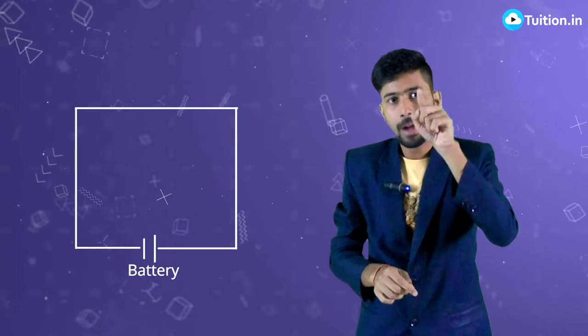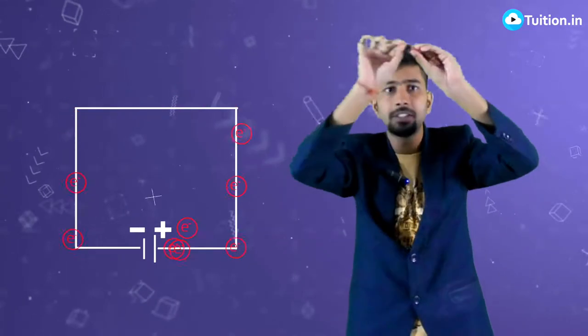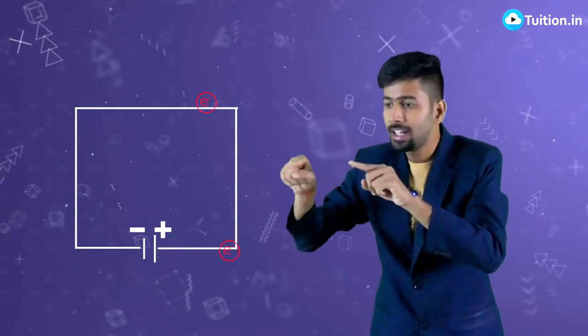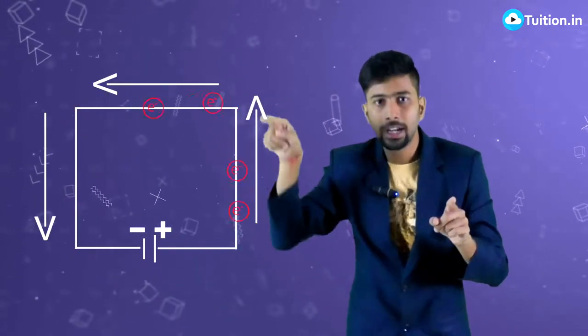If I take this wire and I connect it to a battery now, this battery has a positive terminal and a negative terminal. What this battery does is it redistributes the charges in this wire in various directions, so that there is a net electric field established in this wire from the positive terminal to the negative terminal.